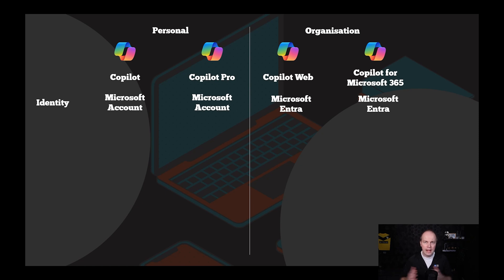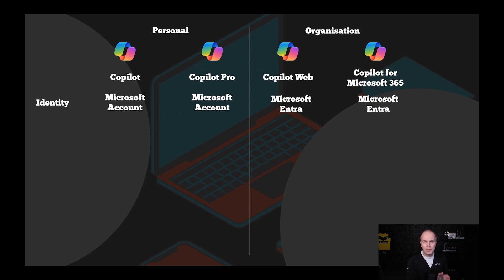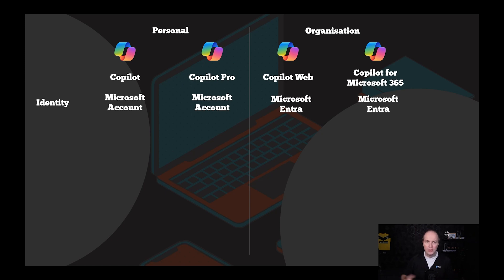So you can see how these are now broken down into two. If you're interested in the individual side of things, you've got Copilot. This is your ChatGPT equivalent with DALL-E 3 — the ability to log in with your Microsoft account, ask questions, do prompting, and get responses. This data is saved by Microsoft and used to train models, the same way that happens with ChatGPT, Claude 2, and other AI models.